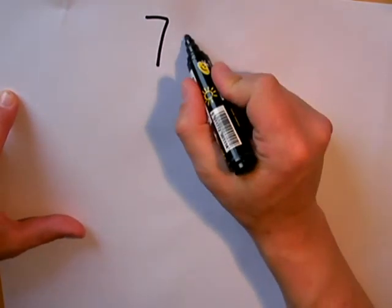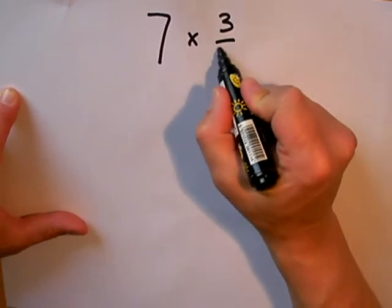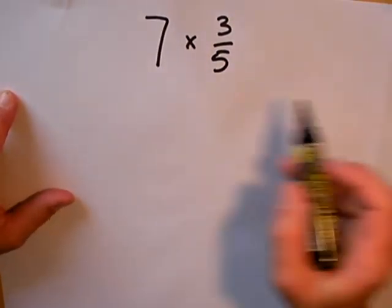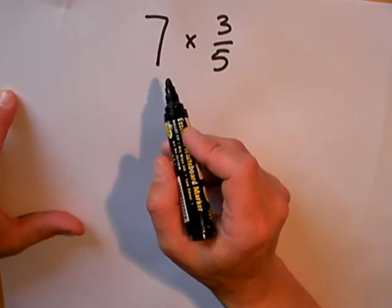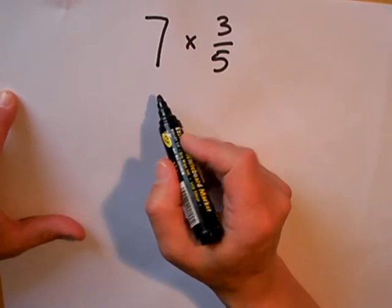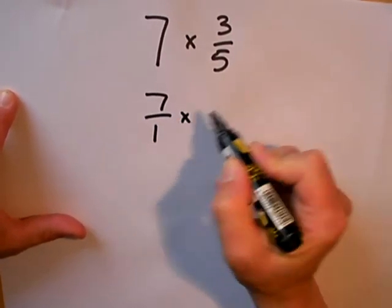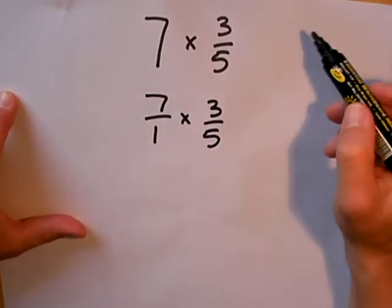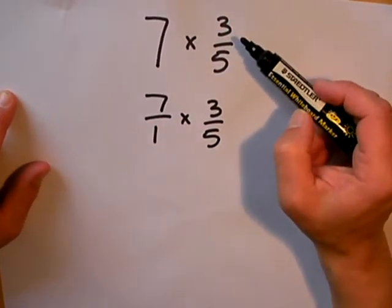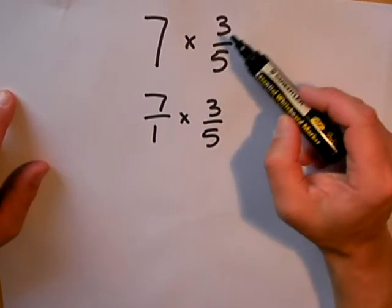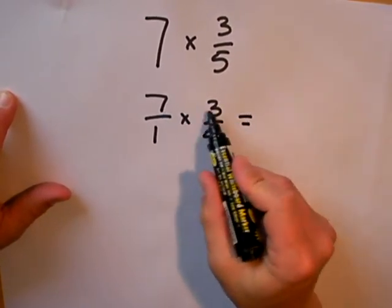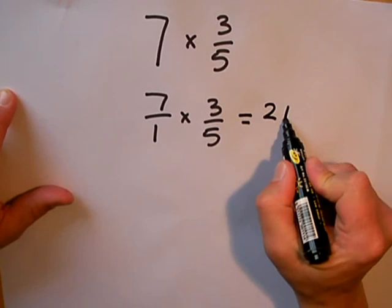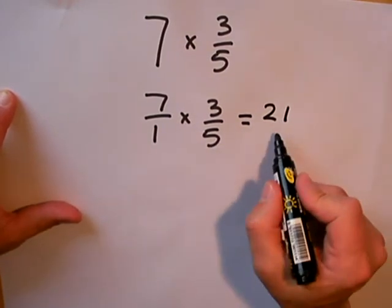What about if you have some whole numbers? Here's an example: 7 whole ones multiplied by 3/5. Instead of thinking of multiplying by 7 whole ones, we can think of multiplying by 7 fractional parts, but whole ones can always be written as 7 over 1. So I'm going to rewrite the question as 7/1 multiplied by 3/5. Now I simply multiply the top numbers together, 7 × 3 = 21, and multiply the bottom numbers together and I get 5.